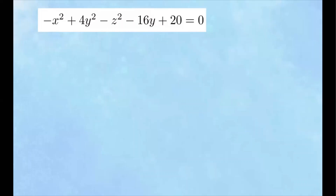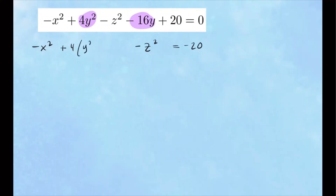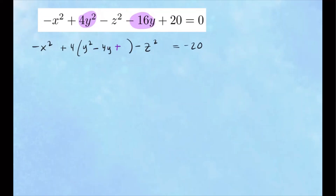Let's complete the square. X doesn't have any linear terms, so x is alone. Y has a linear term, so we group those together. Z is also alone. The constant moves to the right-hand side. So we got negative x squared, then 4y squared minus 16y — leave a space — minus z squared equals negative 20. We factor out a 4 from the y terms: 4 times (y squared minus 4y). Taking half of negative 4 gives negative 2; squared gives 4. So we add 4 inside the bracket. Overall we added 4 times 4, so we add 16 on the right-hand side.